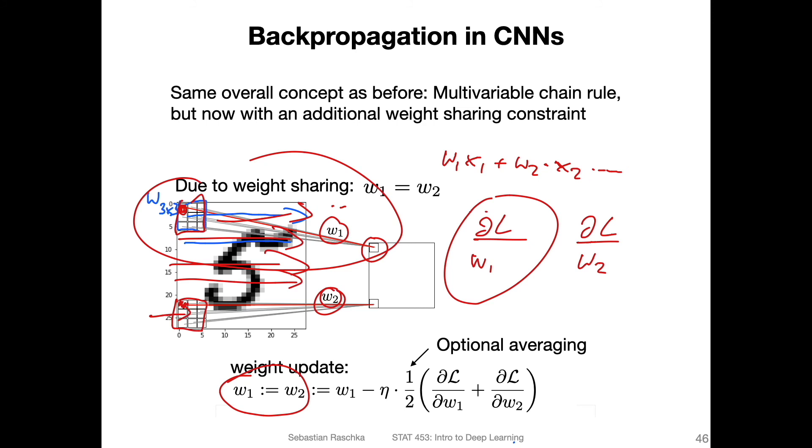And then in practice, usually, when we compute the weight update for those two weights, we average over them. You don't have to average, this is optional, you can actually skip that. But using the multivariable chain rule, you would combine these two partial derivatives for both regions. That's all I wanted to say about backpropagation in CNNs. It's essentially the multivariable chain rule.